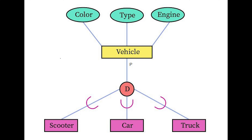Let's look at the diagram. We have a vehicle entity type with attribute types color, type, and engine. It is broken down into three different entity types: scooter, car, and truck. Those three entity types inherit the attribute types of the superclass. The bottom three are subclasses because scooter, car, and truck belong to the vehicle entity type. Attribute types specific to subclasses can be attached to that entity type, but if there's an attribute type that all share, it goes to the superclass since subclasses will inherit it.